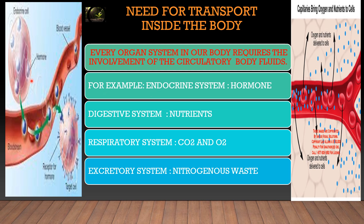For example, the endocrine system. Endocrine cells produce hormones, and these hormones are directly poured into the blood. Through the blood, they reach the targeted organ. All substances produced by organ systems reach the required area only through circulatory body fluids. That is why transport of substances happens through body fluids — without them, substances will not transfer from one area to another, making circulation essential for proper metabolic activities.